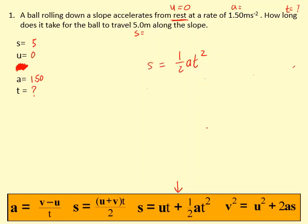I'm going to put in the values. Five, which is S, equals half times 1.5 times T squared. I'm going to rearrange. So I'm going to bring the half to the other side, which becomes a 2 and divide by the 1.5.